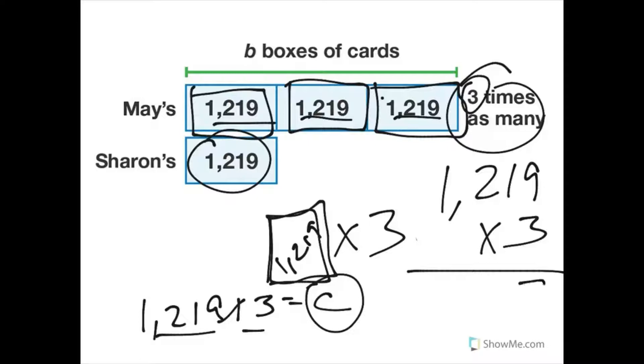So go ahead and do that. Do 1,219 times 3 and then we'll go over it. 3 times 9 is 27. Carry that 2. 3 times 1 is 3 plus 2 is 5. 3 times 2 is 6. 3 times 1 is 3. So 3,657 boxes of cards. That shouldn't be cards, should it? It should be boxes. Boxes of cards. Because it has B up here.